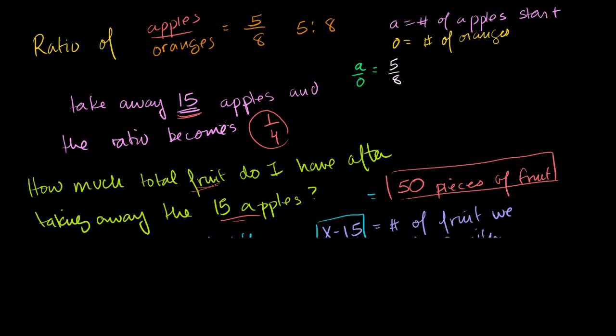Then we remove 15 apples. So if we remove 15 apples, how many apples do we have? We have A minus 15 apples. And they tell us that the ratio of apples to oranges becomes 1 to 4. So A minus 15, which is the number of apples we start with minus 15, the ratio of that to oranges is equal to 1 over 4.